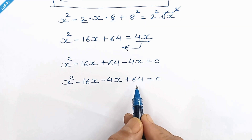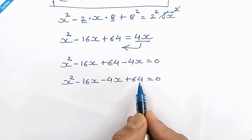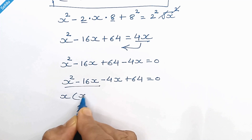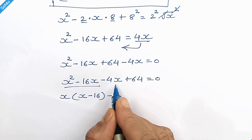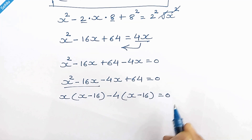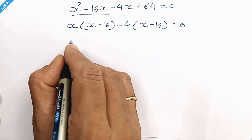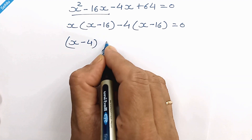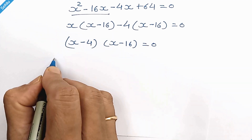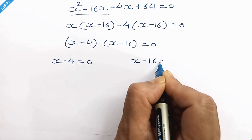It's a quadratic equation already in a convenient form to factorize, because 16 times 4 is 64. We take x common from the first pair and 4 common from the second, giving us (x minus 4)(x minus 16) equals 0. Hence, x minus 4 equals 0 and x minus 16 equals 0.